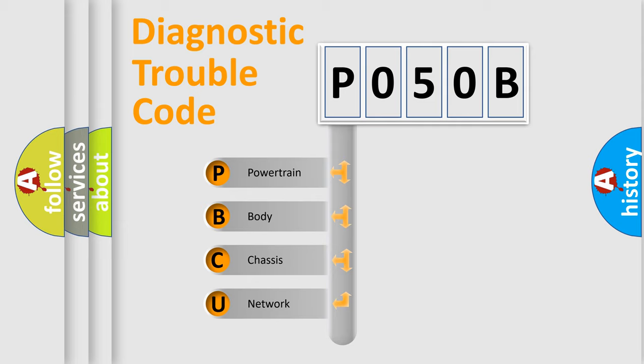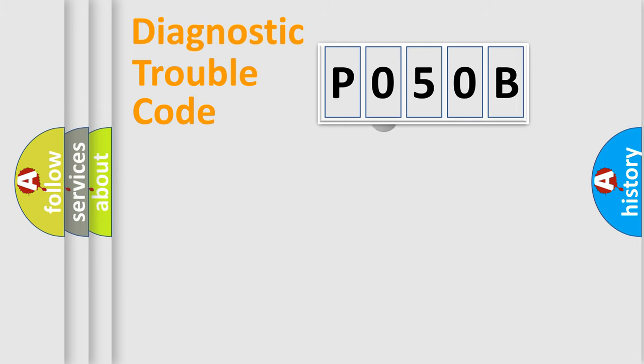We divide the electric system of automobile into four basic units: Powertrain, Body, Chassis, and Network. This distribution is defined in the first character code.